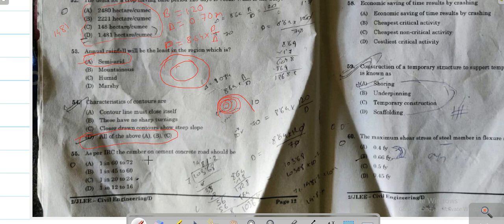Next question: As per IRC, the camber on cement concrete road will be. As per IRC, the camber on cement concrete road will be - option number A is correct.